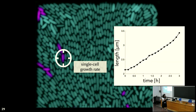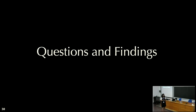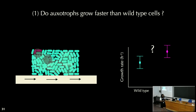What we can do is measure single cell growth rates. Each point represents a particular frame, and we can see how big a cell is growing over a given period of time. Now I'll discuss the main questions I'm interested in testing and some findings. The first question was to see if the auxotrophs grow faster than the wild type cells — the pink cells are the auxotrophs and the green cells are the wild type cells.